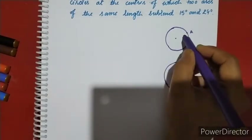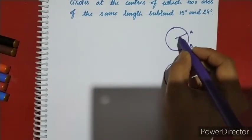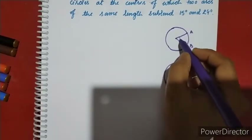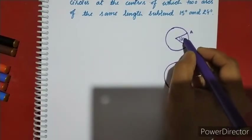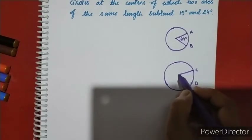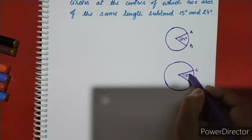The center angle for one circle is 24 degrees and for the other circle is 15 degrees.